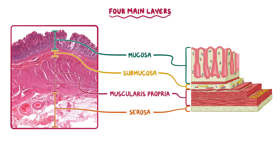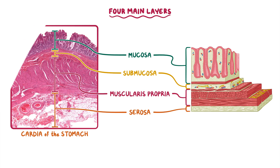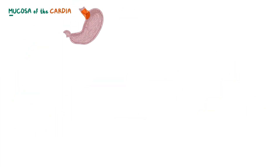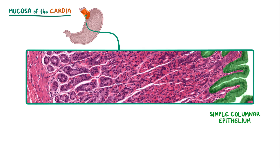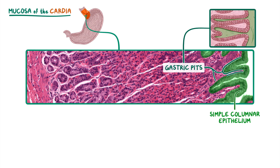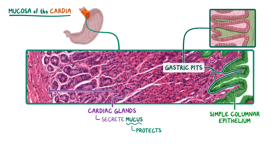This low power longitudinal section of the stomach was taken from the cardia. Looking closer at the mucosa of the cardia, we can see that the surface has a simple columnar epithelium with many invaginations that form millions of gastric pits. The gastric pits comprise about a quarter of the mucosa's thickness, and at their base they join with multiple tubular cardiac glands that secrete mucus protecting the esophagus from gastric reflux and contributing to the stomach's gastric juice.